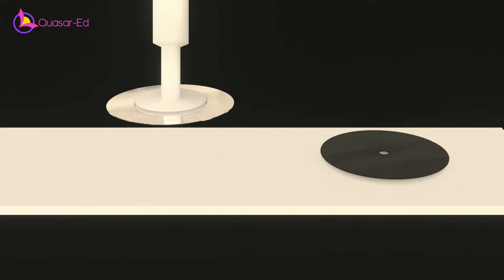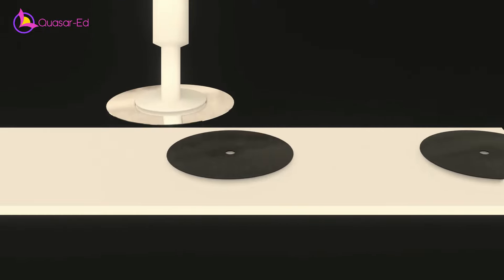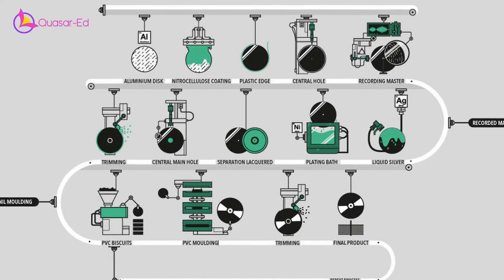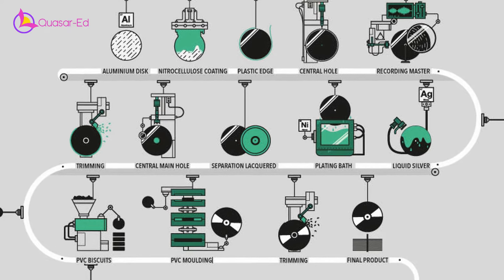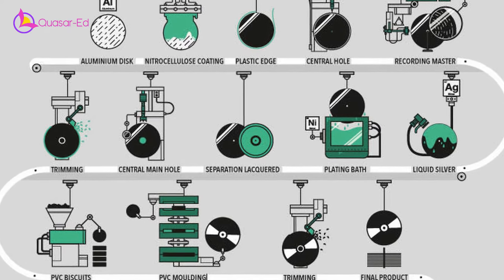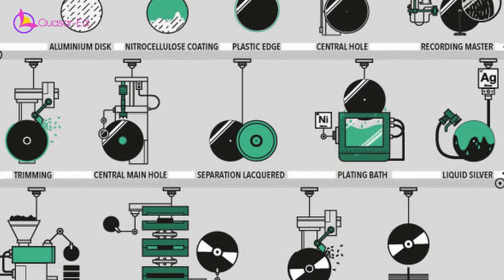One nickel disc or stamper can be used for about 1500 times before losing its quality. This is just an overly summarized process of record making. In reality, the processes are more complicated and each factory has its own production techniques.